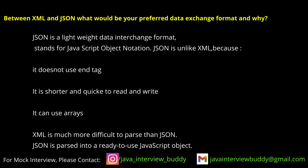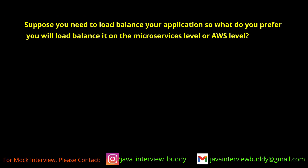JSON also supports arrays, which XML does not. Suppose you need to load balance your application — do you prefer load balancing at the microservices/Java level or at the AWS level? On AWS, there are multiple ready-made functionalities available, like pricing-related and customer-related options. If you want to customize traffic division across multiple availability zones, you would prefer AWS load balancer.